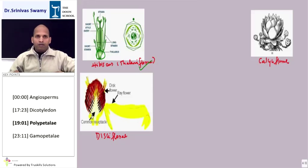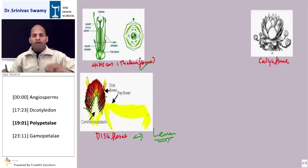Then Disciflorae, where the thalamus is cup-shaped. It is like a cup from which things are originated. This is called Disciflorae and this is basically found in lemon flower or lemon plant. The thalamus is disc-shaped. Flowers or the thalamus is disc-shaped from which flowers generally originate.